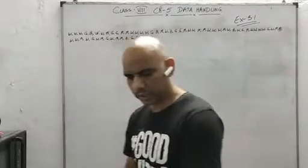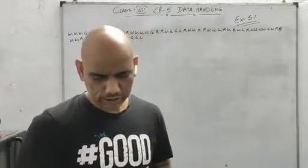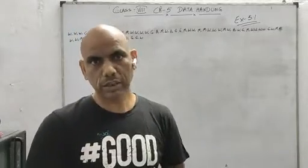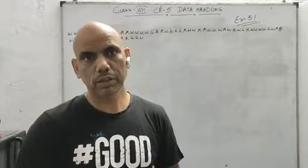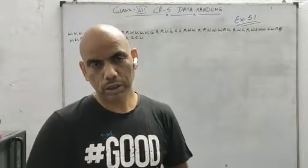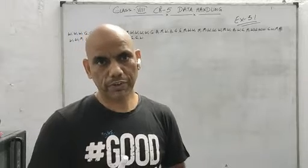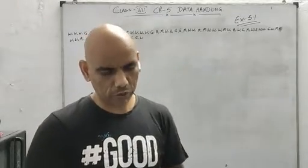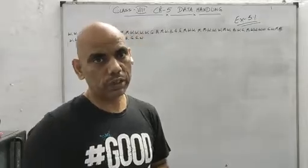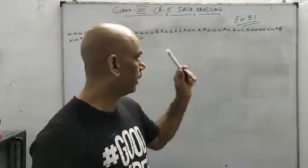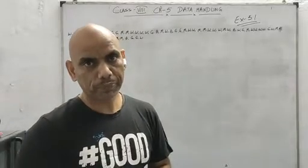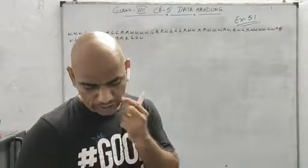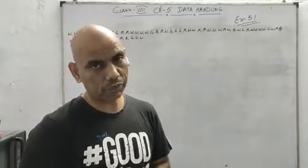Hello, my dear students. Once again I am here for Exercise 5.1. In our previous class we understood how to draw a histogram and how to convert data into grouped data. We also studied bar graph, pictograph, and double bar graph in previous classes. Now we will solve question number 2 of Exercise 5.1, in which we will make a frequency distribution table and draw the bar graph for it.